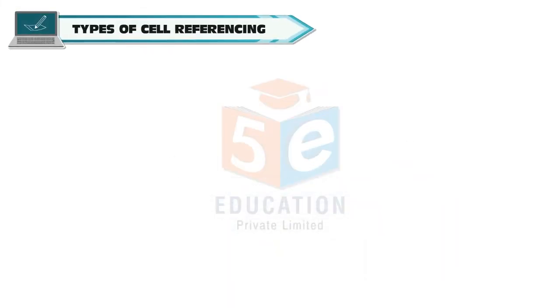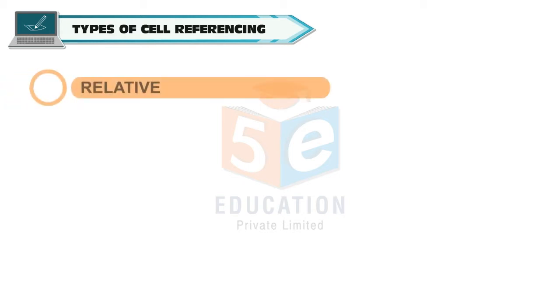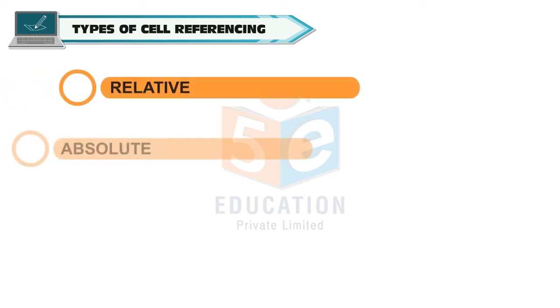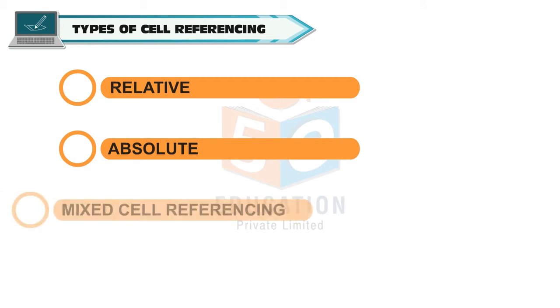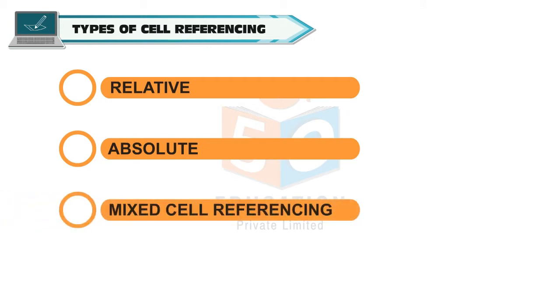Types of cell referencing. Basically, there are three types of cell referencing: relative, absolute, and mixed cell referencing.